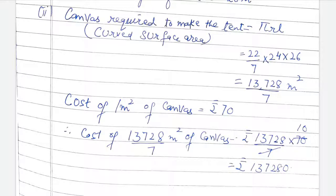I kept it as a fraction — no need to convert to decimal. Wherever there is a multiplication case later, we can simplify. Cost of 1 meter square canvas is ₹70, so cost of 13728/7 meter square means we multiply 13728/7 by 70 — see how simple it becomes. Question 5 we will do later. Now we will see question number 6.